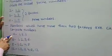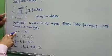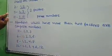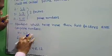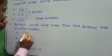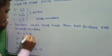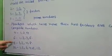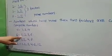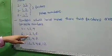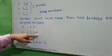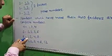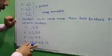Let's take some examples. The factors of four are one, two, and four — that is three factors. The number six has four factors: one, two, three, and six. Number eight has four factors: one, two, four, and eight.